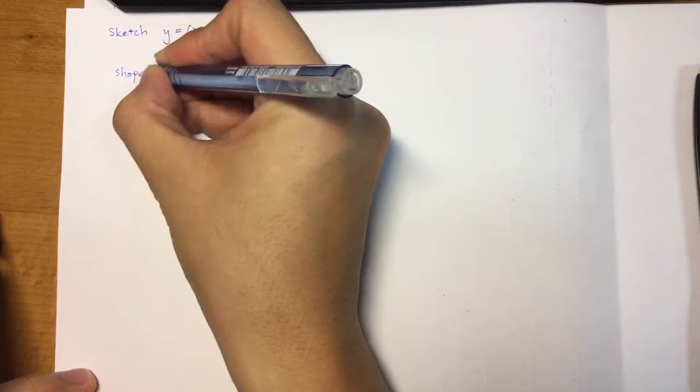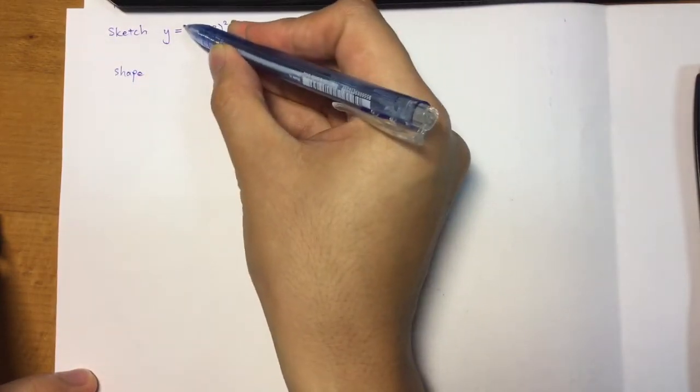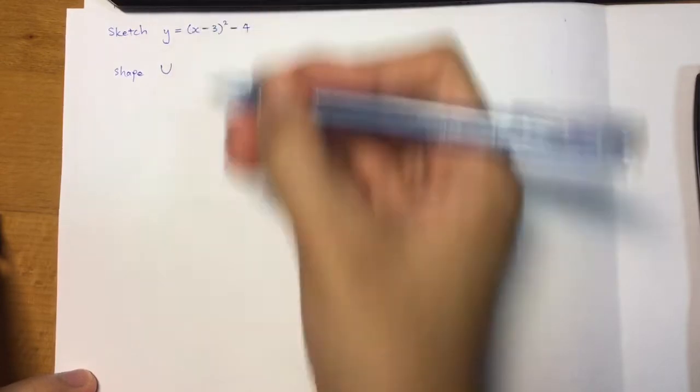We've got to know the shape. Since it's a positive coefficient here, it's going to be a U shape.